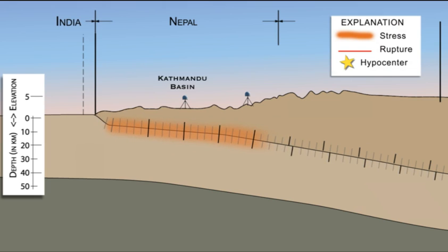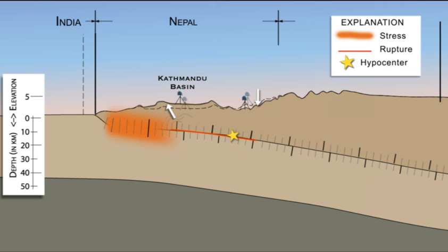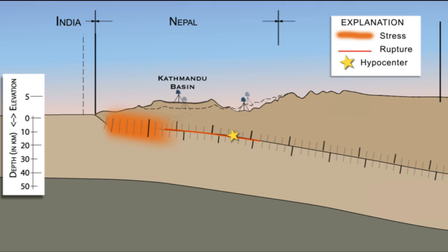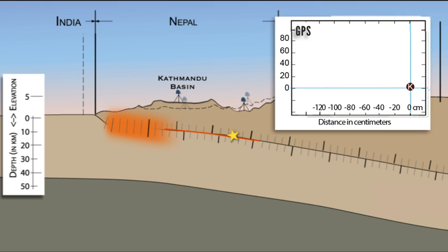During the Gorkha earthquake, that stress overcame friction, and the overriding Eurasian crustal block lurched southward. Maximum displacement of 3 meters occurred on the megathrust about 20 kilometers north of Kathmandu, but the fault did not rupture to the surface.